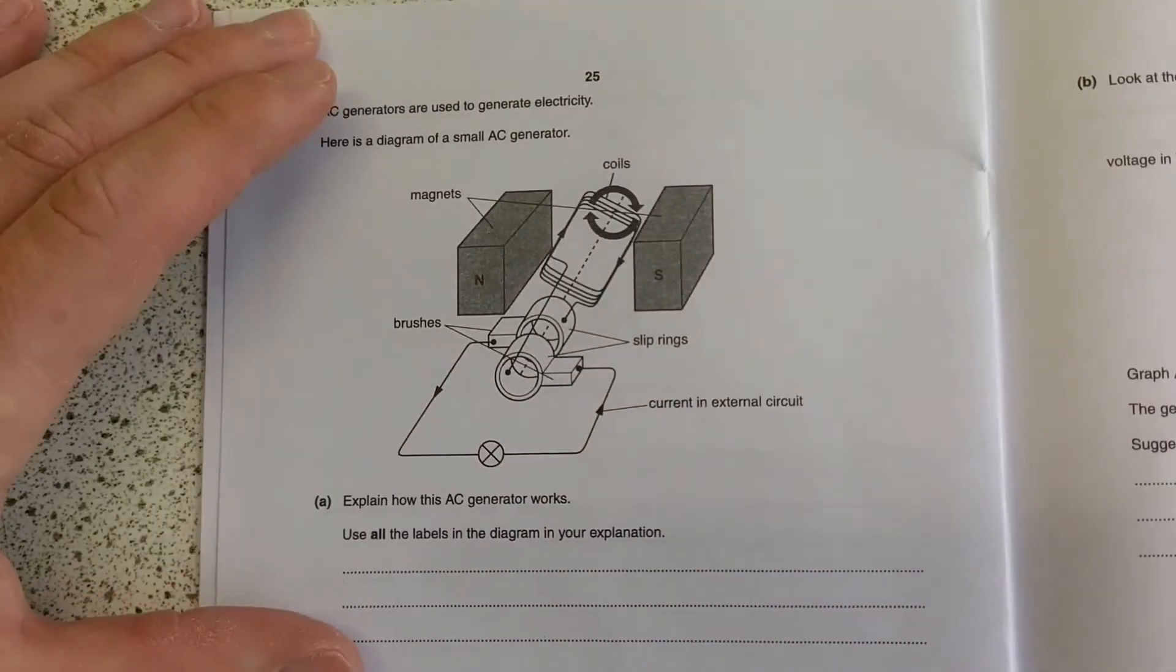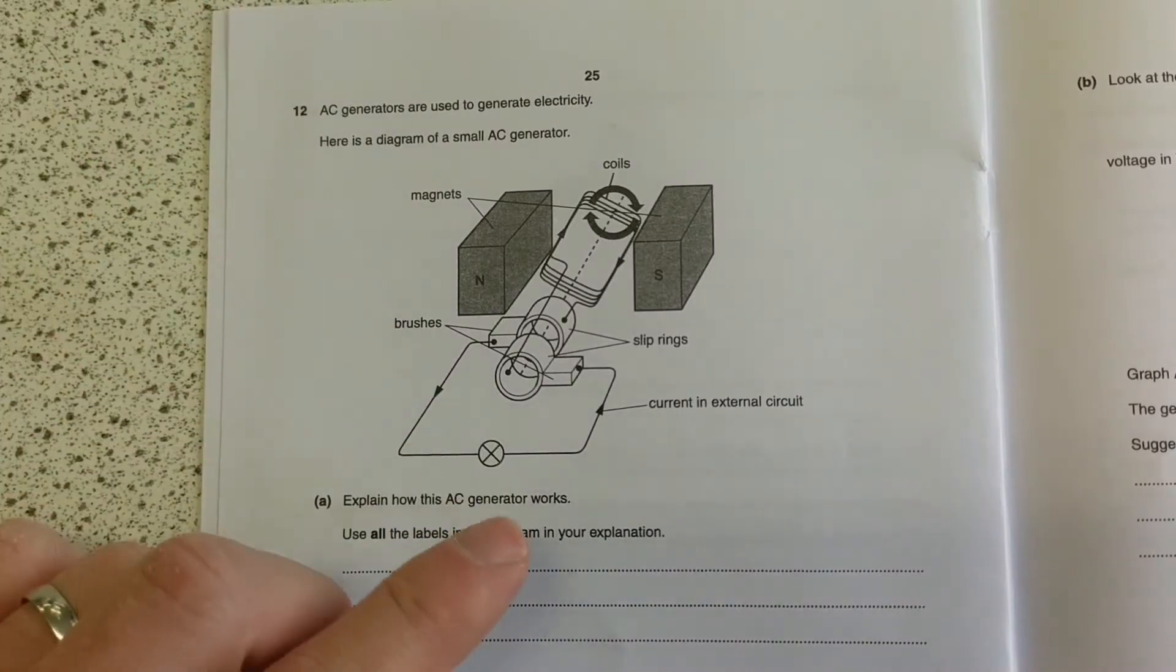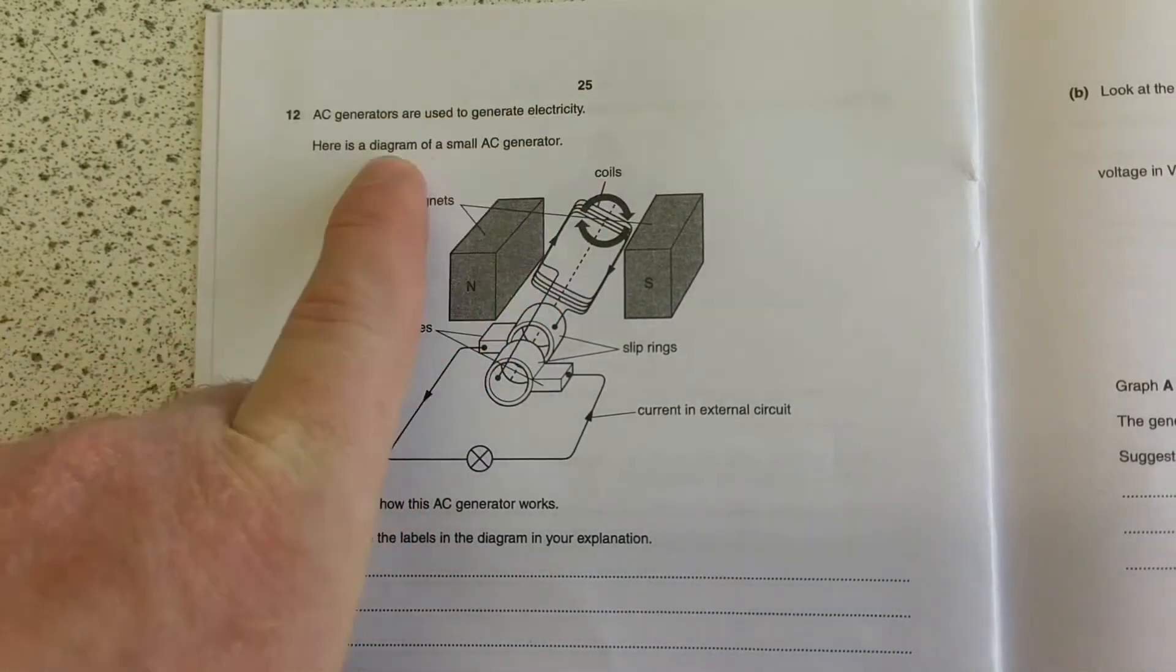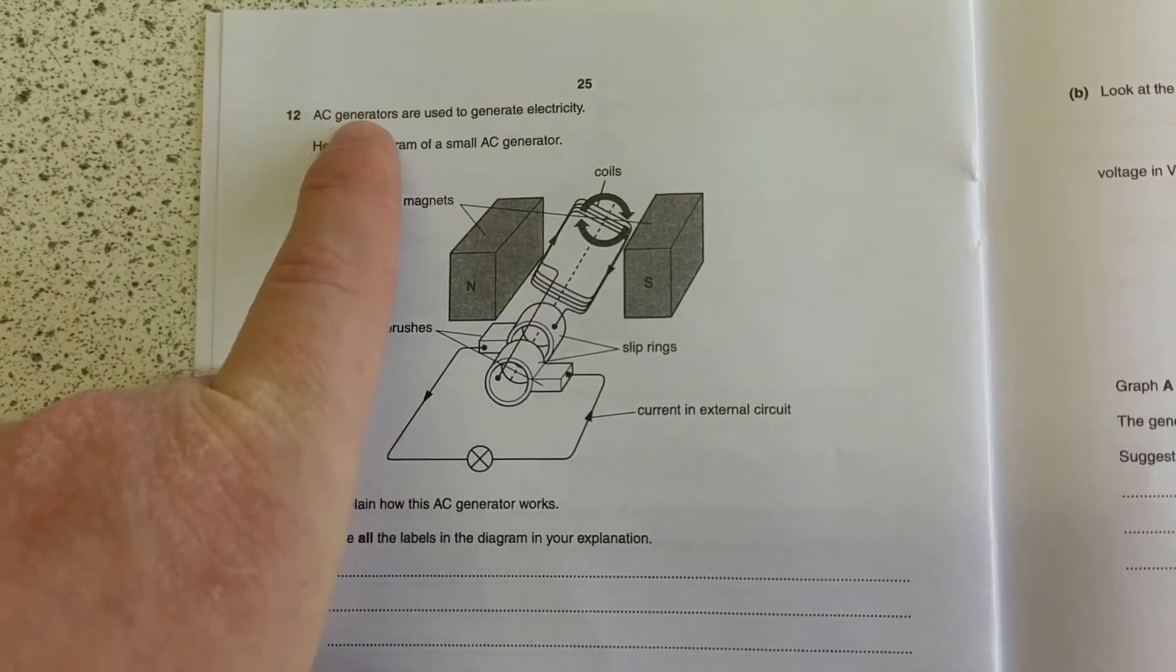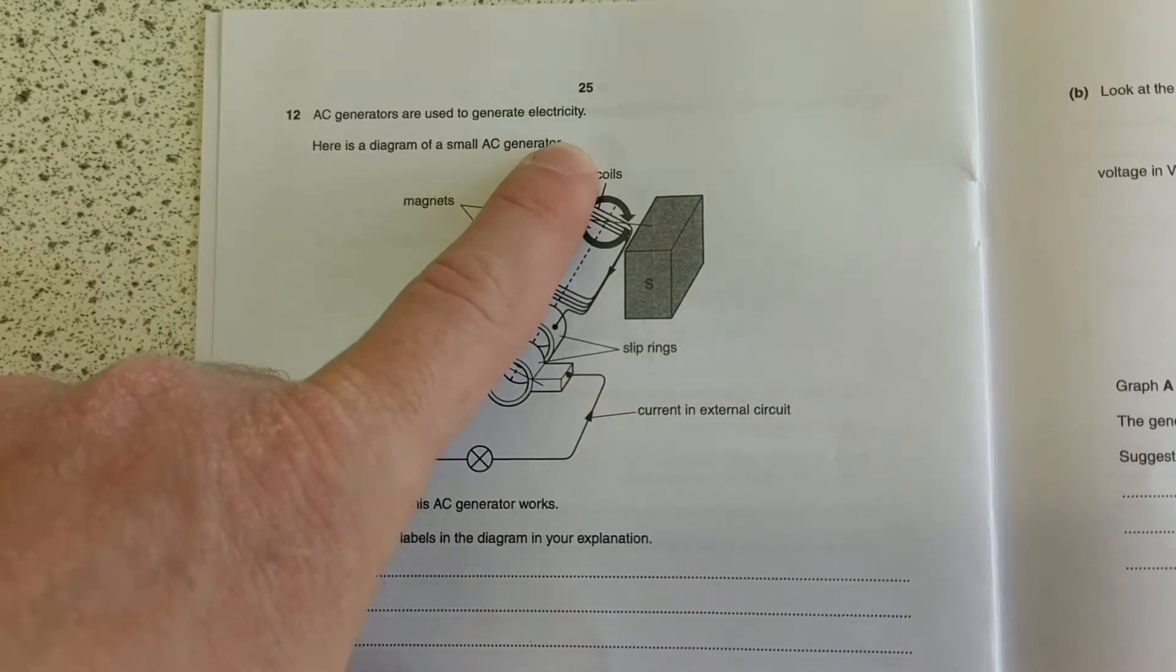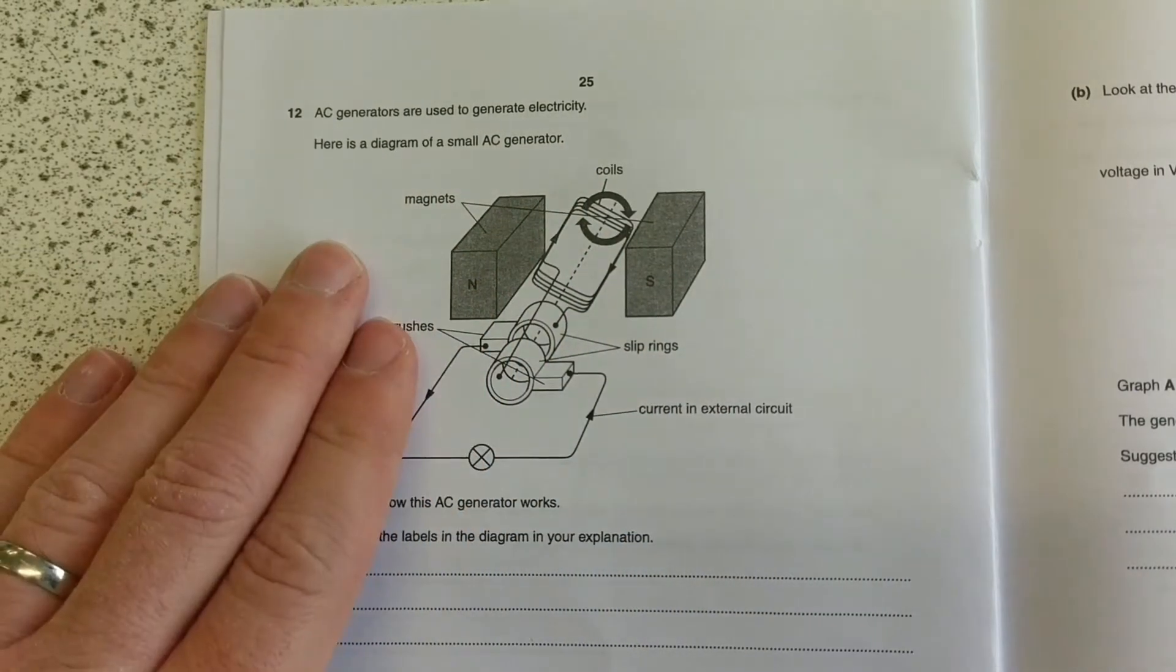So in this question here, so many of my students have given me a wonderful explanation of how a motor works. But when we read this question, it does not say the word motor once. AC generators are used to generate electricity. Here's a diagram of an AC generator. It looks pretty similar to a motor question, but it's an AC generator.